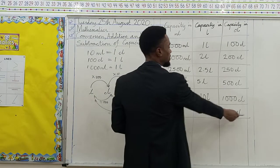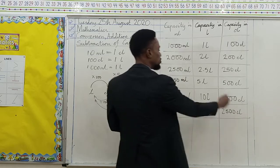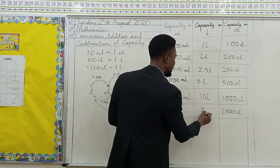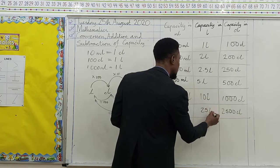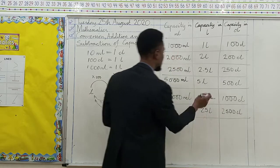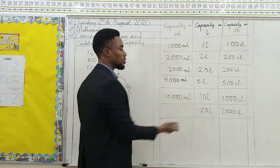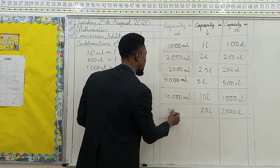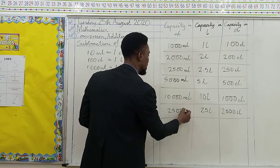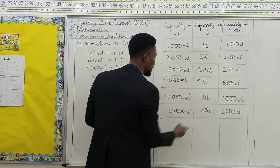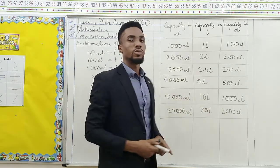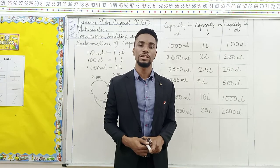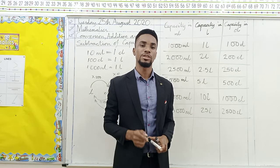Here we have 2,500 centiliters. Centiliters to liters — we take away two zeros — that gives us 25 liters. And then liters to milliliters — three zeros added to liters — gives us 25,000 milliliters. Now we are going to move to the second part of the lecture.